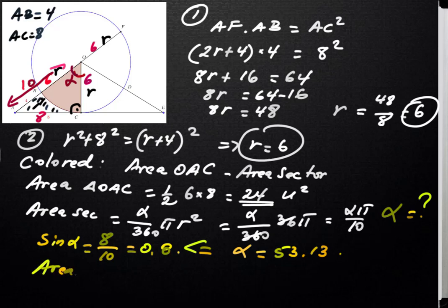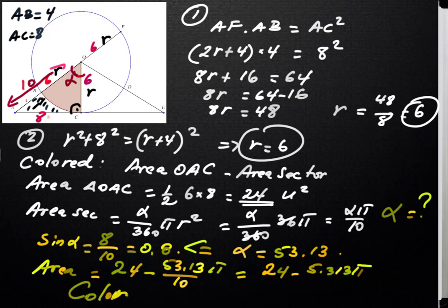So we can say if we plug in alpha now, the area of the sector, or the total area actually we are looking for, is equal to area of the triangle minus area of our sector. That's 24 minus 53.13 times π over 10, which is equal to 24 minus 5.313π. If we calculate that, we find our colored area. So the colored area here is simply 7.31 roughly, okay, unit squared. Thank you for watching and see you in the next video.